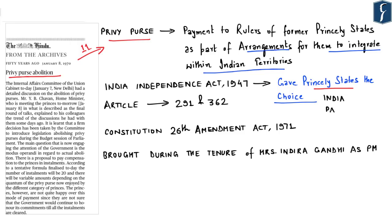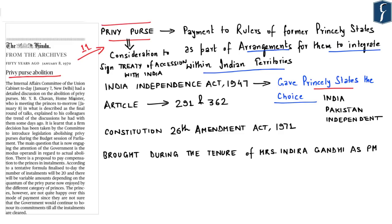After the Indian Independence Act of 1947, princely states were given the choice to join India, join Pakistan, or remain independent. Privy purse was thus a consideration for these princely states to sign the instrument of accession with India. On signing the instrument of accession, the Government of India granted a specified sum of money payable annually to the rulers of such states. However, the privy purse was abolished through the Constitution 26th Amendment Act of 1971, done by Mrs. Indira Gandhi as Prime Minister.